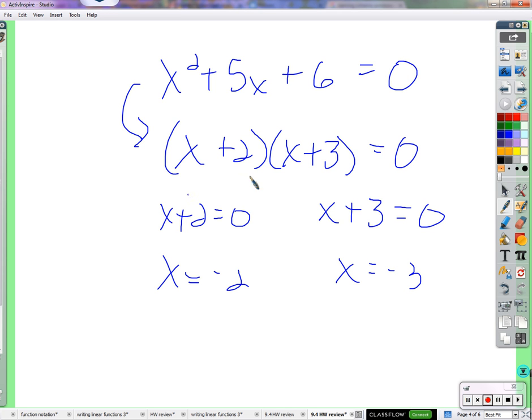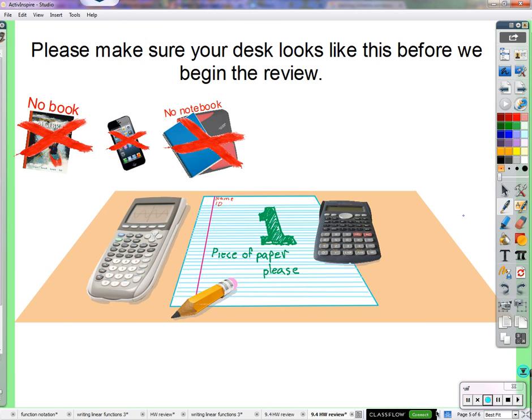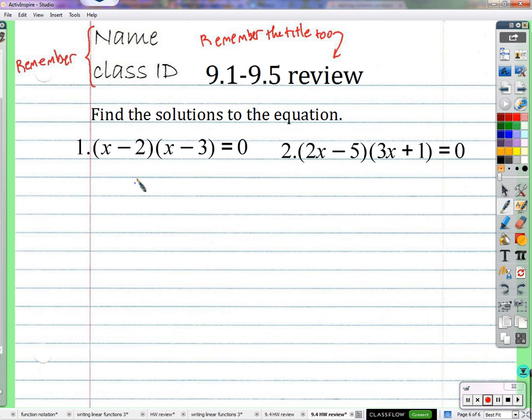Are you ready to show me you can solve these equations? Are there any questions before we start? So you've got a piece of paper. First equation, you have x minus 2, there's one thing, times x minus 3, there's a second thing, equals 0. So either this thing is 0, or this thing is 0. Add to both sides, x equals 2. Add to both sides, x equals 3.